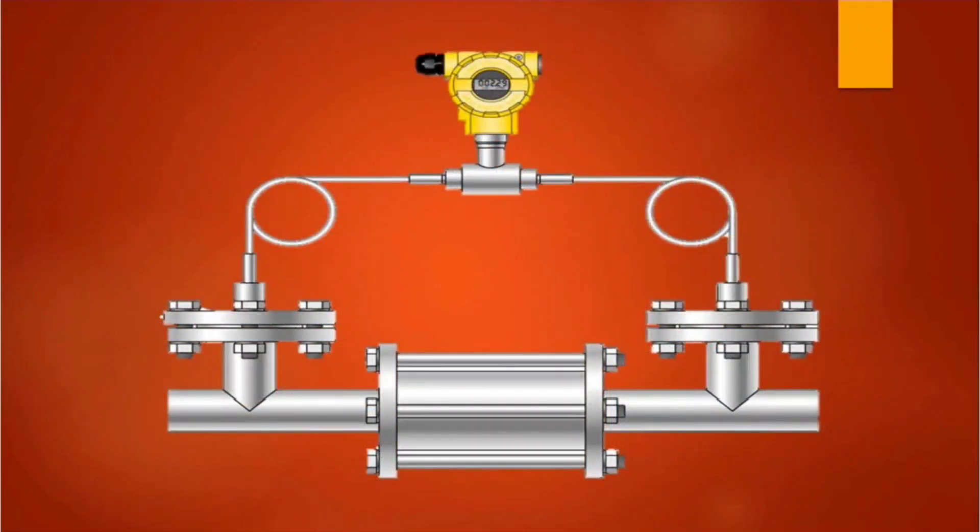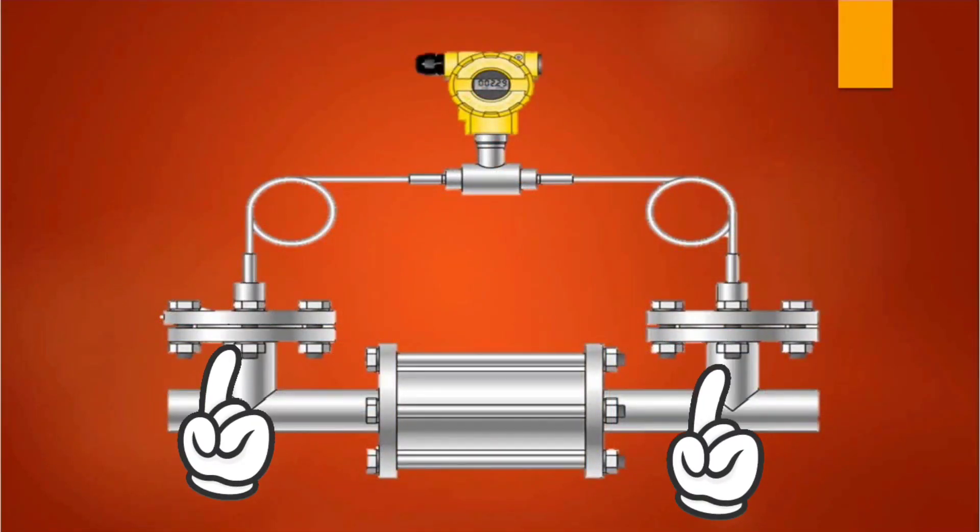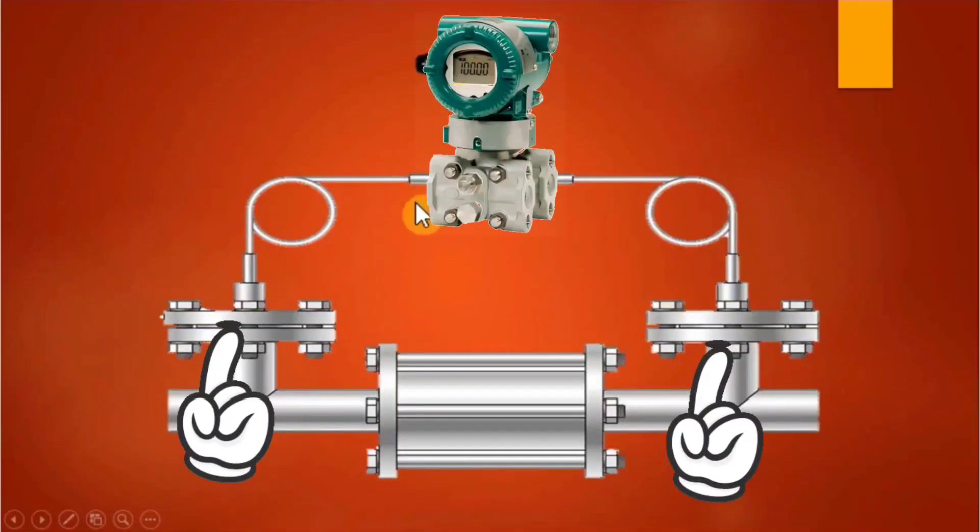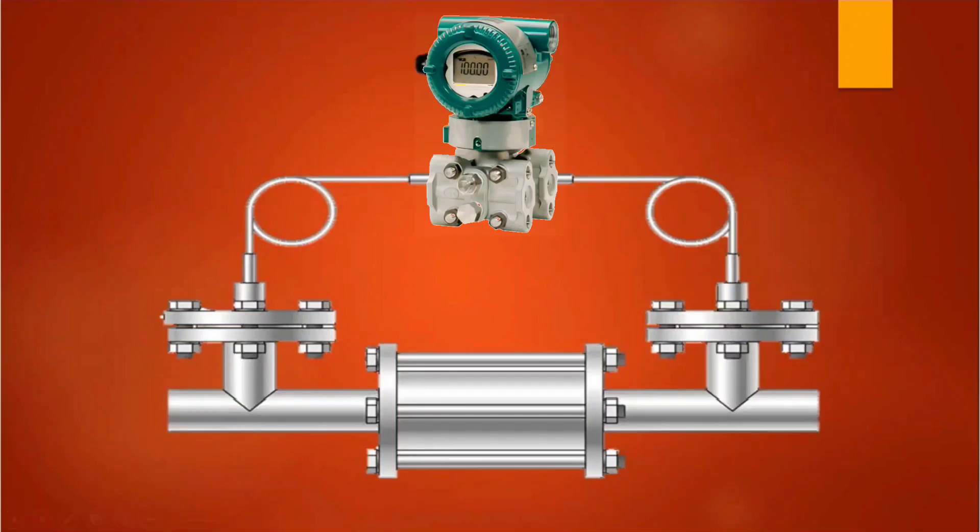Now let us know about the next type. Between any two points, for differential pressure measurement, DP-type transmitter is used. In this transmitter, the first port and the second port pressure difference is measured.